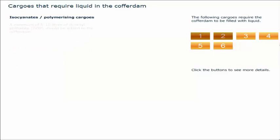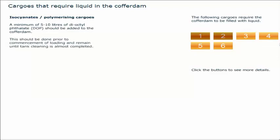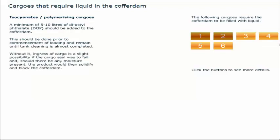A minimum of 5 to 10 litres of dioctyl phthalate should be added to the cofferdam. This should be done prior to commencement of loading, and remain until tank cleaning is almost completed. Without it, ingress of cargo is a slight possibility if the cargo seal was to fail, and should there be any moisture present, the product would then solidify and block the cofferdam. The DOP will ensure that any leakage remains in a liquid state.